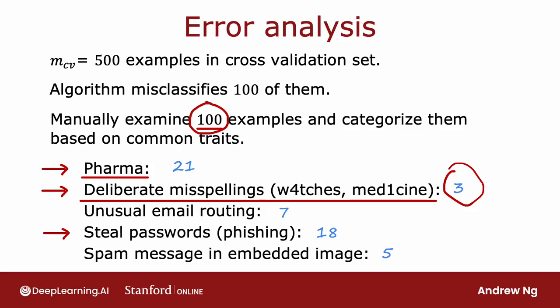Just a couple of notes on this process: these categories can be overlapping — in other words, they're not mutually exclusive. For example, there can be a pharmaceutical spam email that also has unusual routing, or a password phishing email that has deliberate misspellings. So one email can be counted in multiple categories.